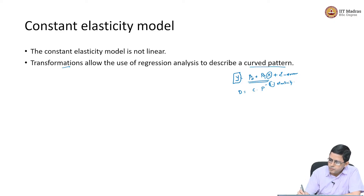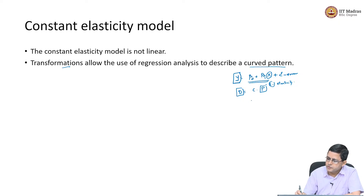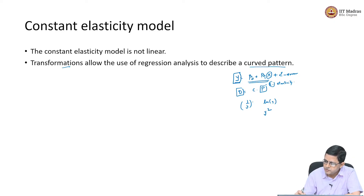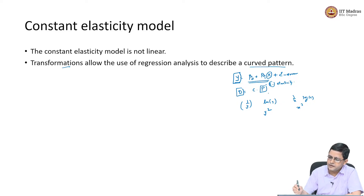We transform y and p in such a way that we get a linear relationship between the response variable and the explanatory variable. We can use instead of y: 1 by y, log of y, or y squared. Similarly, we can use 1 by x, log of x, or polynomial x. By using these transformations, we convert a non-linear relationship to a linear relationship.